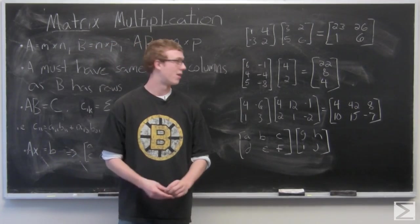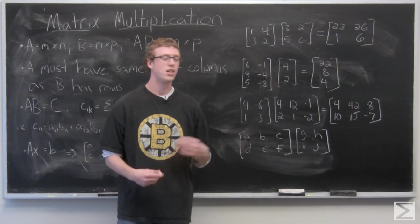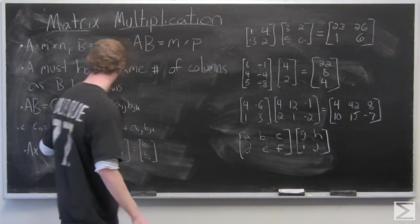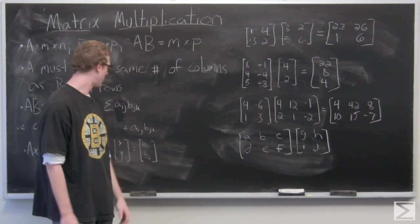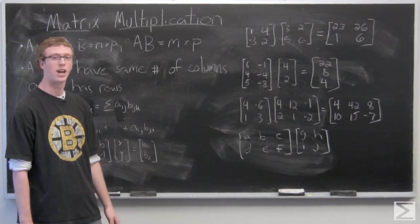That's the most important rule to remember about matrix multiplication. And just remember this formula: CIK equals the sum of AIJ times BJK.